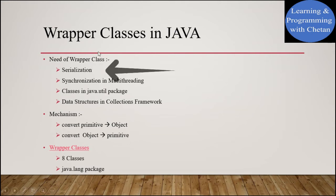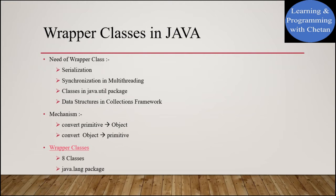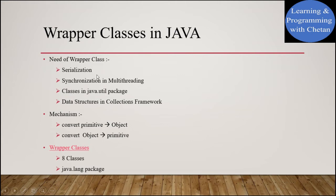If we talk about serialization in Java, then serialization is a process of converting objects into streams. So in the process of serialization we have to deal with objects. Now, in synchronization in multithreading, as we all know, we acquire locks on objects. So here again we need objects, and that generates the need of Wrapper classes.